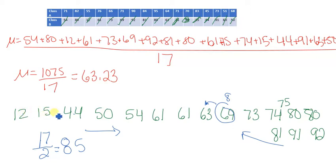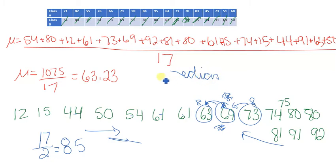So now let's go eight and a half in. One, two, three, four, five, six, seven, eight. This is eight, and a half would be the 69. And then coming in from this side, the 73 would be the eight and a half. So 69 is our middle number. So median is 69.